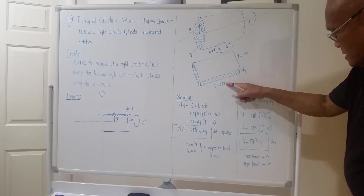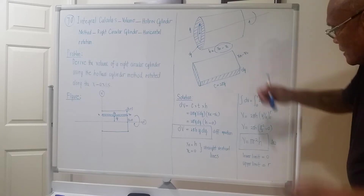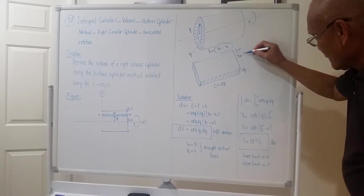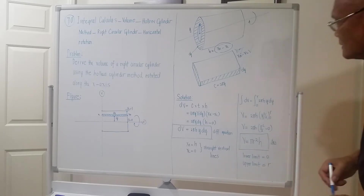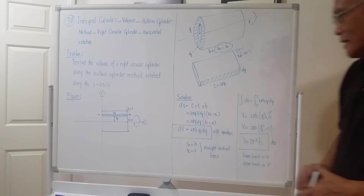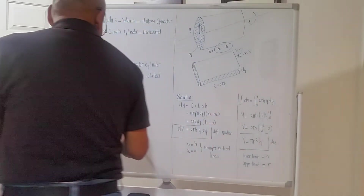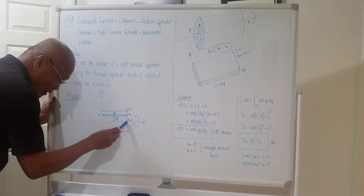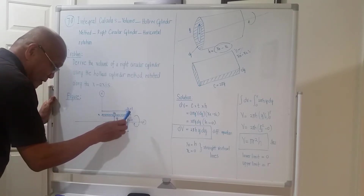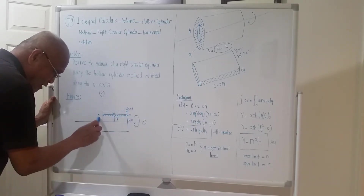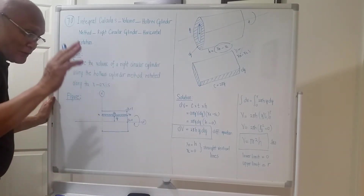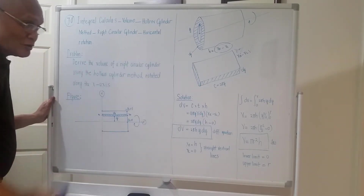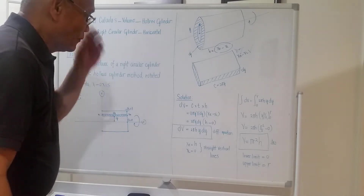The thickness is dy and this is actually h — it is xr minus xl. As dy moves from zero up to r, there should be an xr and xl, but for the cylinder they do not vary; they are both constant. So we are just lucky for this problem.